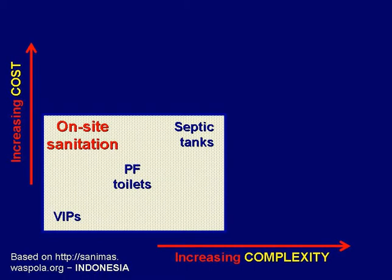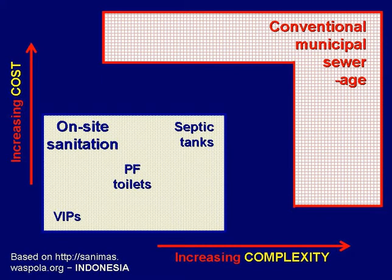This chart from an Indonesian NGO supported by AusAid considers sanitation options in relation to both costs and complexity — both technical and institutional complexity. On-site systems are the lowest cost and the least complex, with the gradation from VIP latrines through pour flush toilets to septic tanks. At the other end of the scale is conventional municipal sewerage, very expensive and relatively complex, but there's a gap in between on-site systems and conventional sewerage.